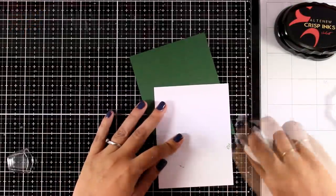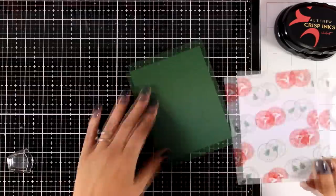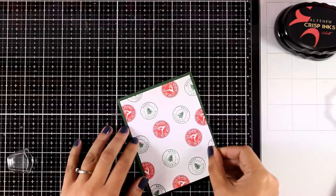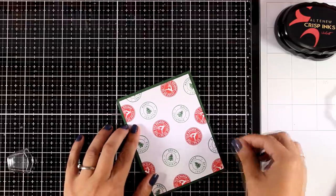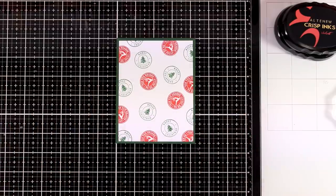I'm using my tape runner at the back and I'm going to stick this panel on top of green cardstock so I end up having a green border. If you're using a different color combo make sure that the background is one of the colors that you used on the front.